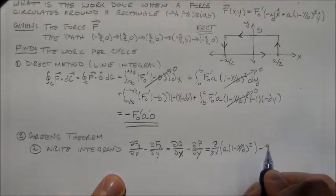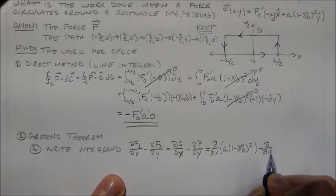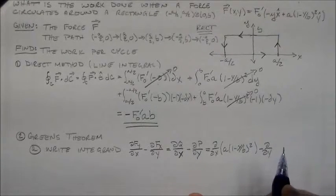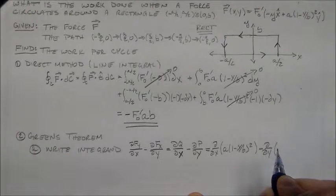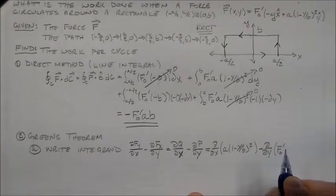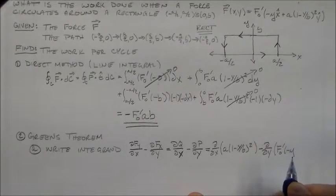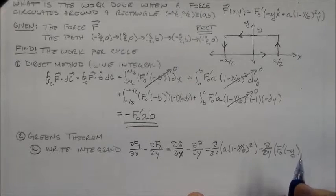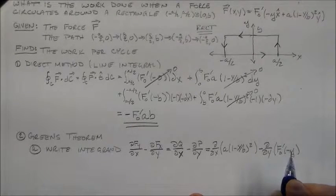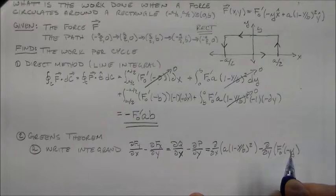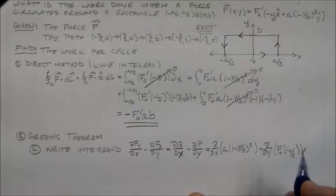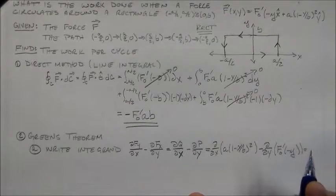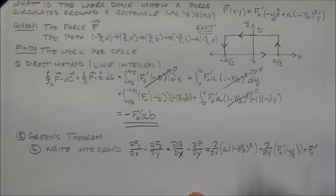And then we subtract dDY the F bit, which is F naught prime times minus Y. I've got that guy there. I just end up with F naught prime, okay?